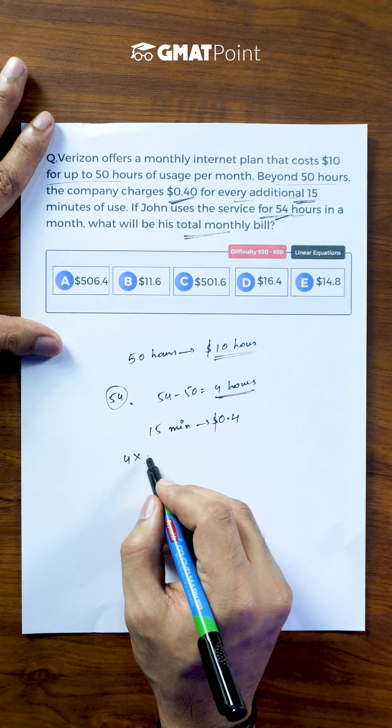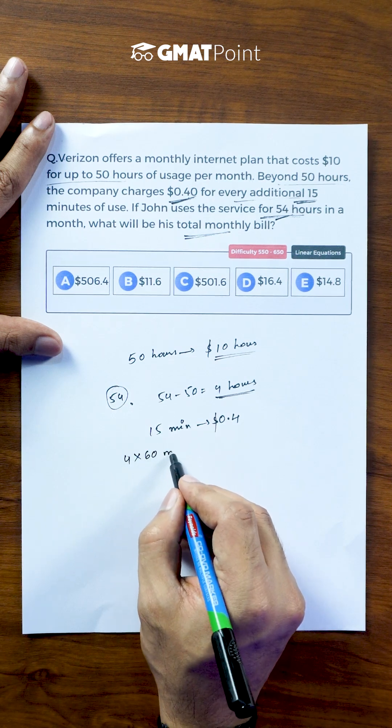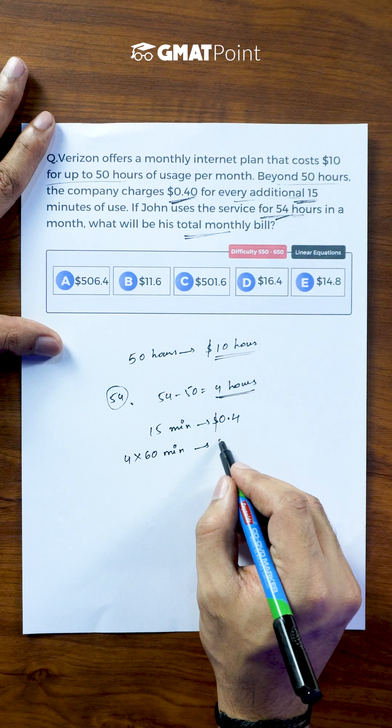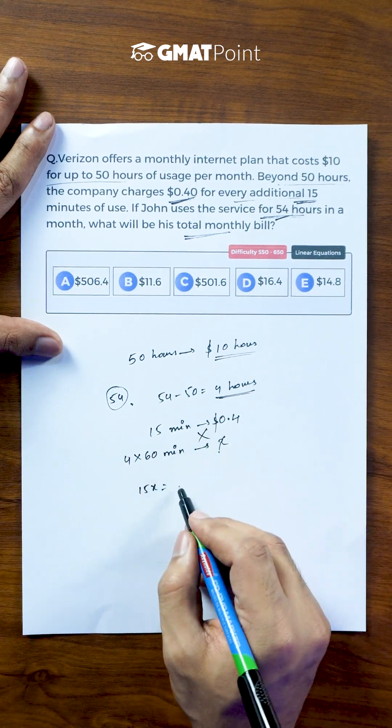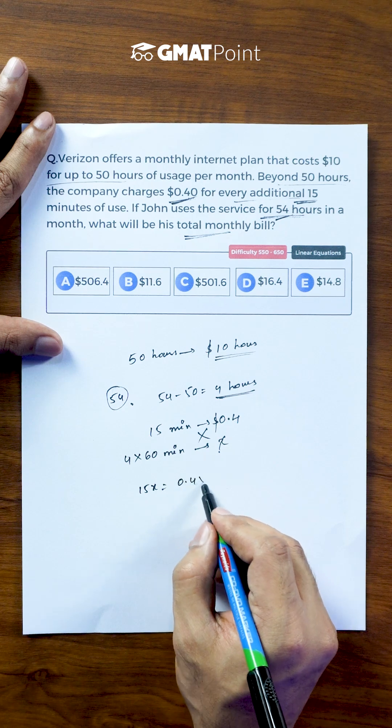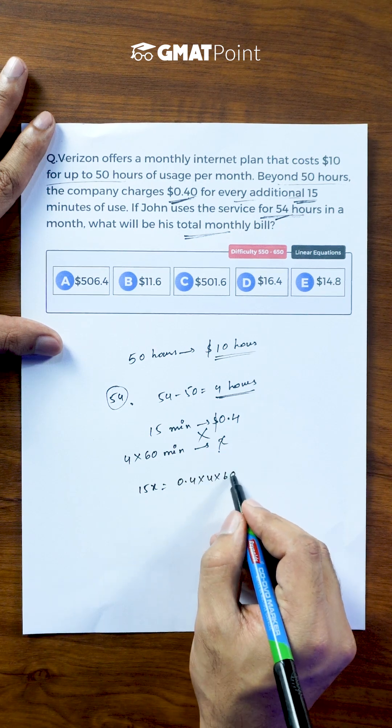So in the total of 4 hours, which is 4 × 60 minutes, the extra charge X can be calculated as upon cross multiplication, we get 15X is equal to 0.4 × 4 × 60.